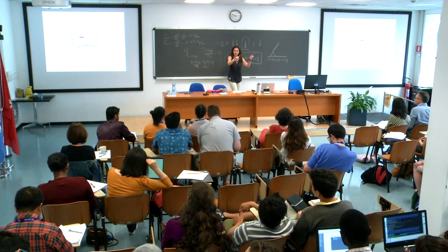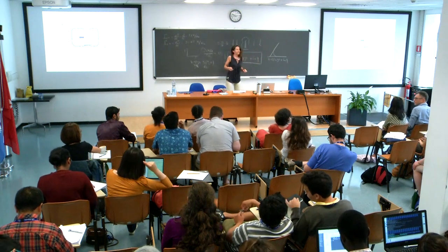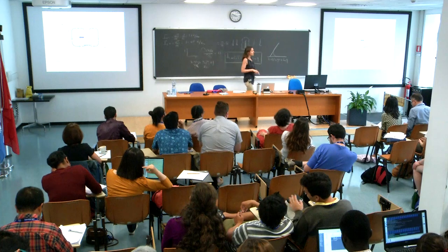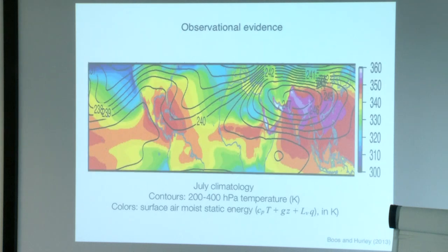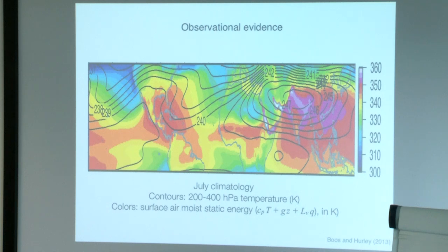I'm being told that I can start again, so blame the organizers. Some evidence that we are not totally off by thinking about monsoons through this convective quasi-equilibrium framework. This is from Booz and Hurley, 2013. It shows from reanalysis the July climatology of upper tropospheric temperatures in the line contours and the moist static energy near the surface. At least for the South Asian monsoon, this coupling between high moist static energy content and maxima in upper tropospheric precipitation is well verified.